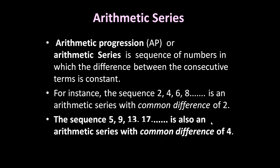Here the common difference is 2. If we see another example, the sequence 5, 9, 13, 17, etc. is also an arithmetic series with a common difference of 4. If you see: 9 minus 5 is 4, 13 minus 9 is 4, 17 minus 13 is also 4. So all these types of sequences are called arithmetic series or arithmetic progression.